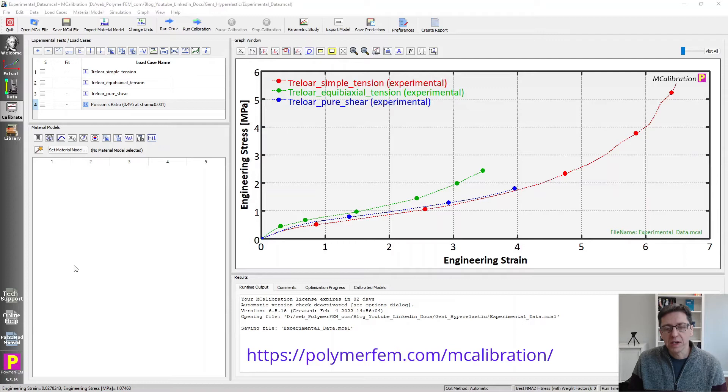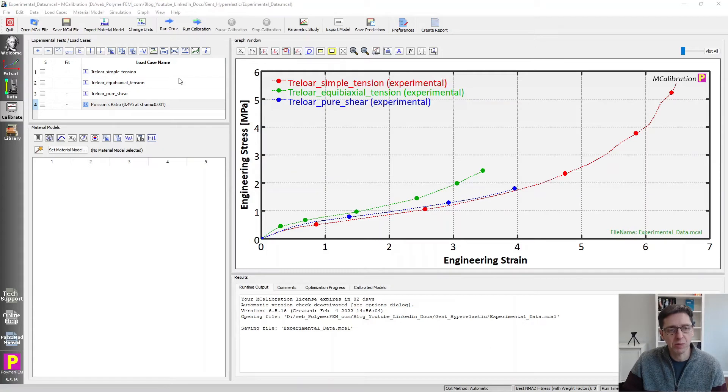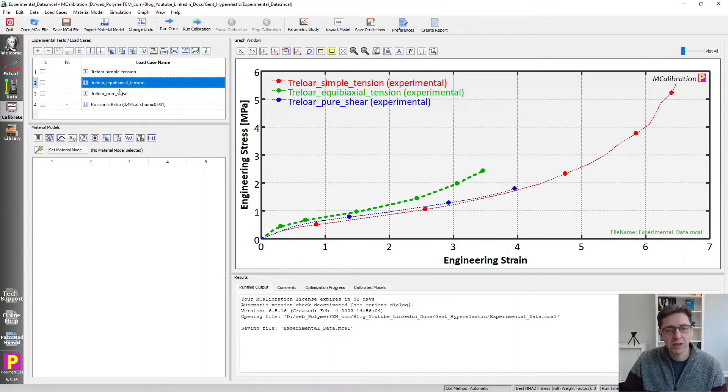So to use this model, I want to demonstrate how simple it is to calibrate this model using experimental data. So this is experimental data for natural rubber from Treloar. It's uniaxial tension, biaxial tension, and pure shear.